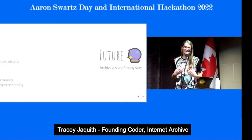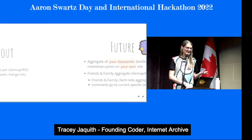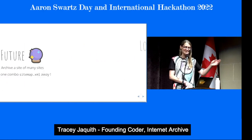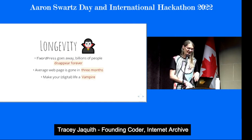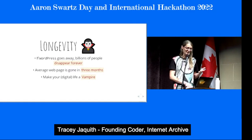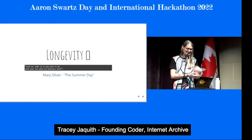At the archive, we like to think of things as good for roaches — should last forever. So if WordPress goes away, billions of people could basically just vanish — hundreds of years from now they'll just vanish. Because all that's going to be left soon is our digital legacy. The average web page is gone in three months. Why not make your digital life — and pretty soon when we're all gone — make it live forever like a vampire.